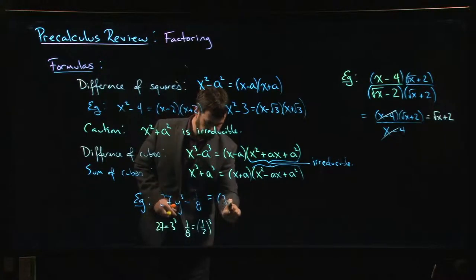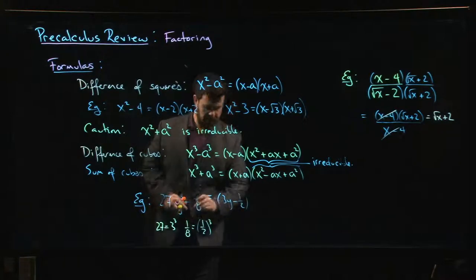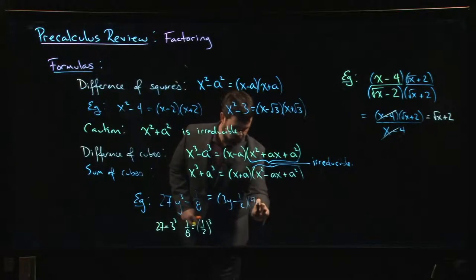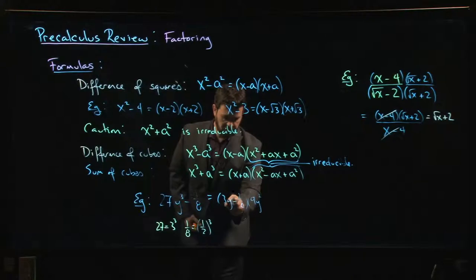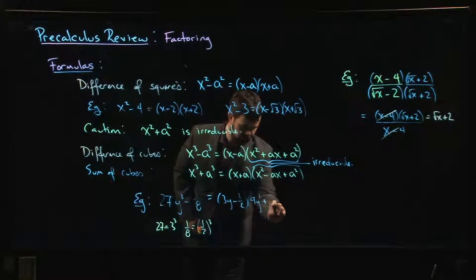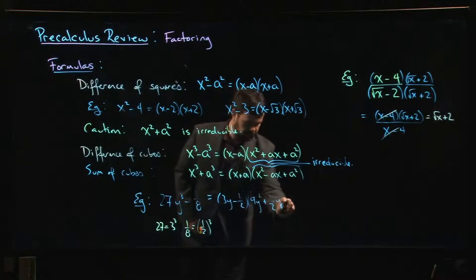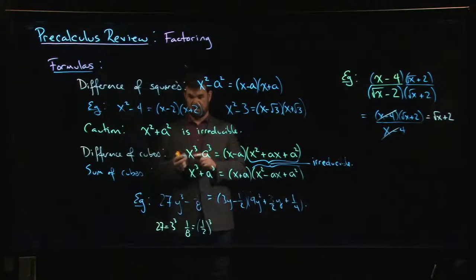So it's going to be 3y minus a half. Now I square the first term: 9y squared. Opposite sign in the product, so it's going to be plus 3 over 2y, and then plus a half squared, so plus one quarter. And you've factored it.